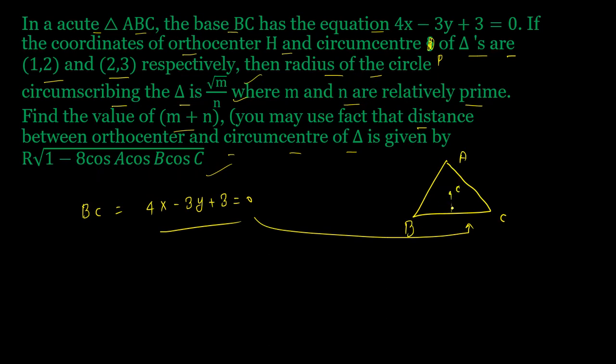The perpendicular distance is the same as R times cos A. So the perpendicular distance is, 2,3 is my circumcenter. So here I have 4 times 2 minus 3 times 3 plus 3 under root of 4 square plus 3 square. This will be R cos A.